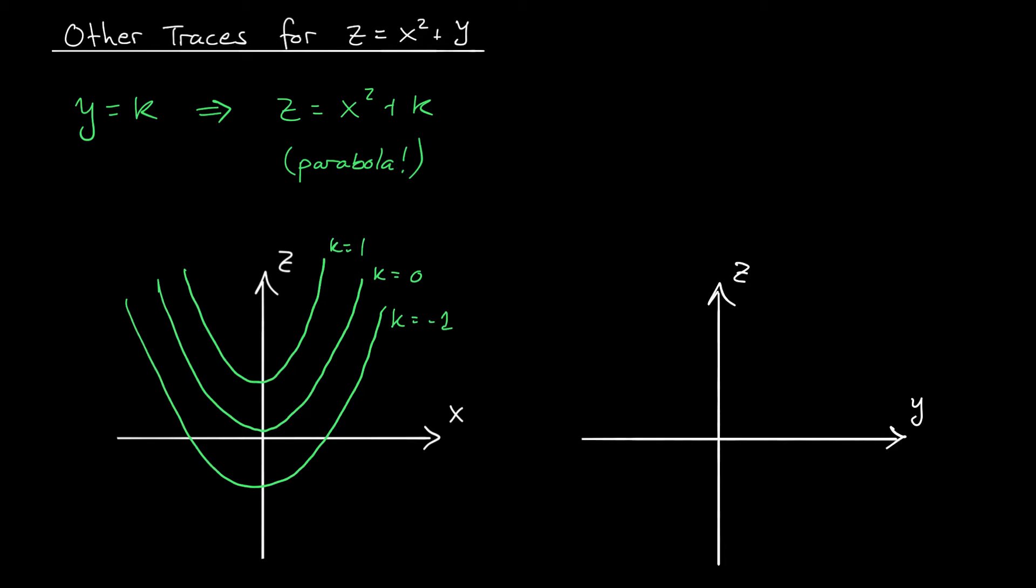What about when we set x equal to k? This is what we get by slicing it in the x-axis. My equation is z equals y plus k squared. Another parabola? Well, not so fast. Remember, k is constant. Here we have z equals y plus a constant. That's the equation of a line, not a parabola.